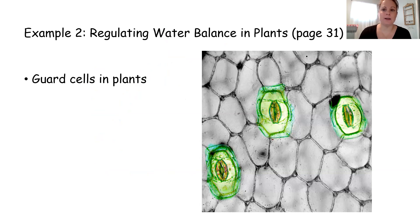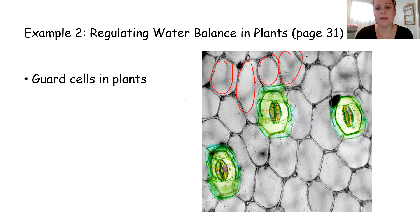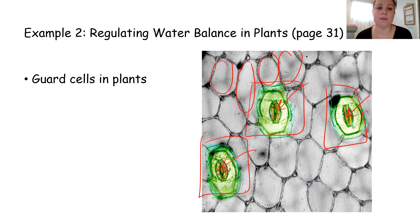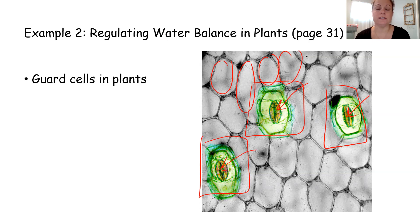The second example on page 31 is guard cells in plants, found on the bottom surface of a leaf. Among normal epidermal cells, these specialized guard cells have openings called stomates that open and close depending on conditions. They are typically open to allow gas exchange and water exchange to occur, but when it's hot, they close up to keep water inside the leaf so it doesn't escape. This is a feedback mechanism that signals these cells to open and close depending on the water levels inside the plant — when water levels are too low they close, and when water is plentiful they open.